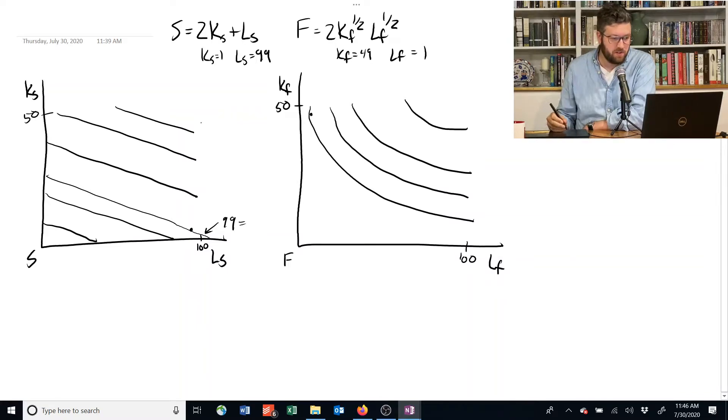The reason I drew these isoquants as sort of terminating in white space, right up here is because the economy is only actually got in this example, 50 units of capital and 100 laborers. So anything outside that range is actually not available to them. We could, there are isoquants. The production technology is still feasible out here.